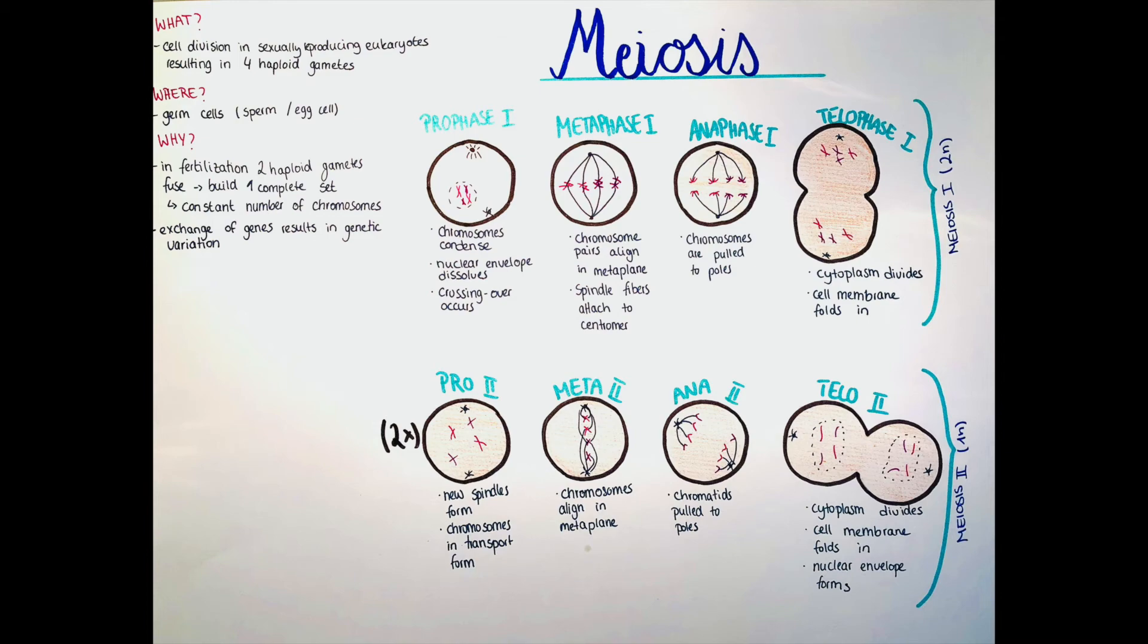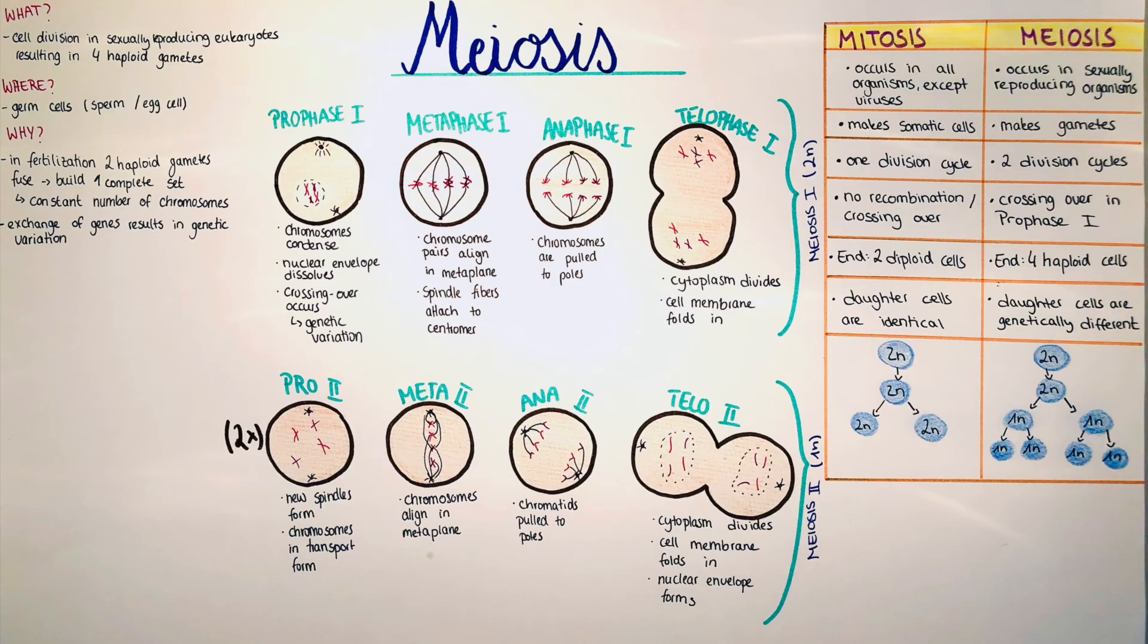Now we will compare the mitosis and the meiosis with each other, just to make the differences and also the similarities clear. So mitosis occurs in all organisms except viruses, and meiosis occurs only in sexually reproducing organisms. Mitosis makes as a product somatic cells, so body cells, and meiosis makes gametes.